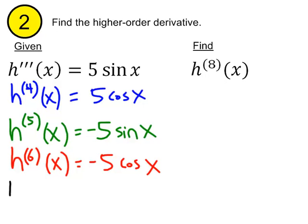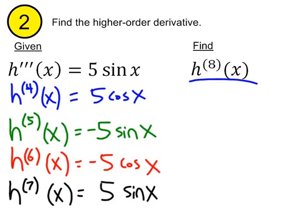If I derive it again, the seventh derivative of h, that would be, let's see, it'd be back to positive five sine x. And if I do one more, that's going to bring me back to the eighth derivative of x, which would be five cosine x.